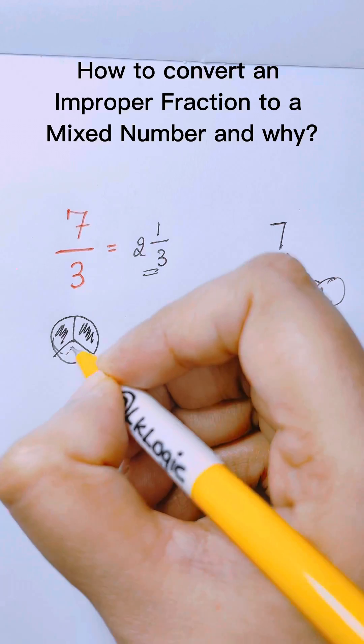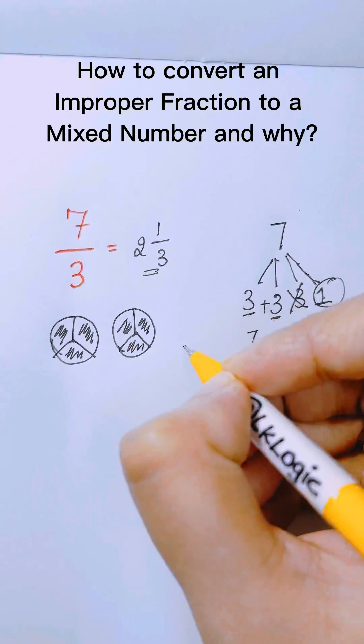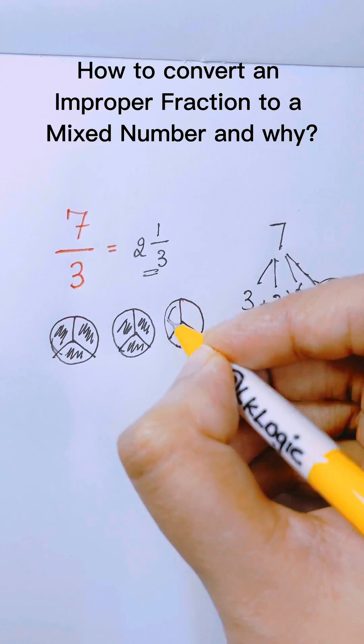So 1, 2, 3. That's not enough. Draw another 4, 5, 6 and that's not enough. We draw one more and that's 7.